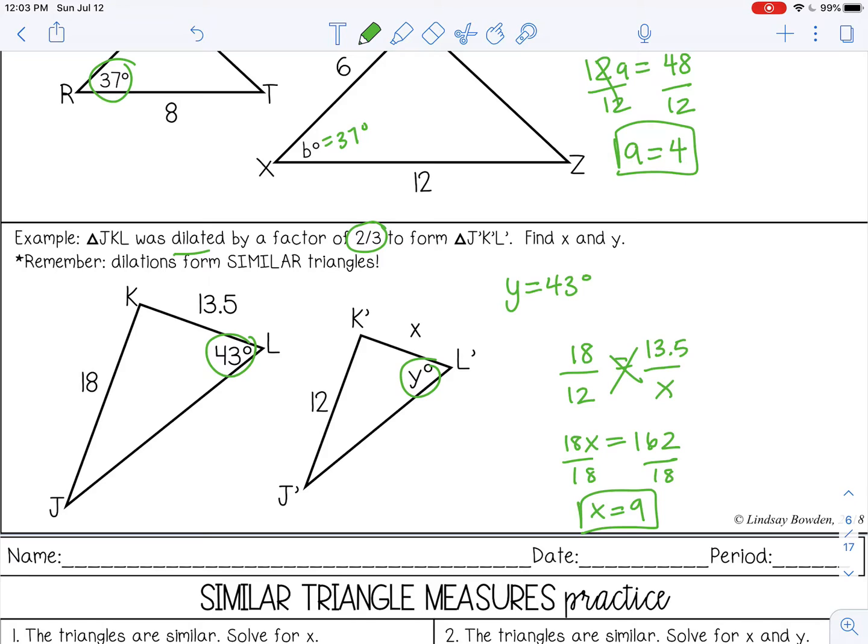Now, I could have taken the scale factor 2 thirds, and I could have multiplied 13.5 by the scale factor. That's another way to do it, and you still get the same answer. It's just working with fractions might be a little confusing sometimes, so either way you want to do it, you'll still get nine.